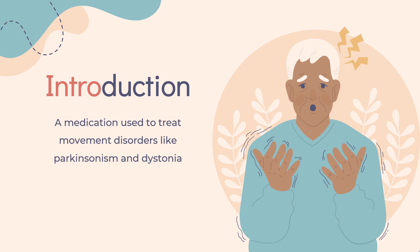Benztropine was approved for medical use in the United States in 1954. It is available as a generic medication. In 2020, it was the 229th most commonly prescribed medication in the United States, with more than 2 million prescriptions. It is sold under the brand name Cogentin, among others.